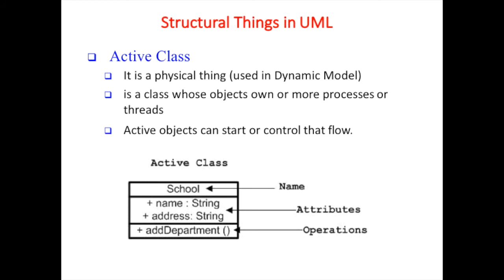Active class is similar to other classes but can have active objects that exist in their own thread of operation and have their own address space. Active objects can initiate the flow and are sequential - they can do things like modify variables and change program behavior. It is a class whose objects have one or more processes or threads. Active objects can start or control the flow. For example, the active class is 'School' with attributes school name (string) and address (string), and operations like add or delete department.